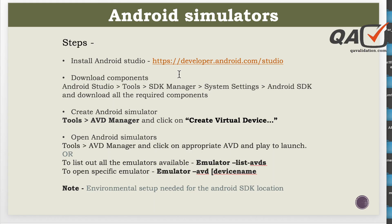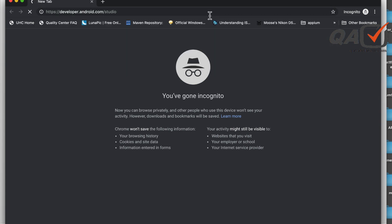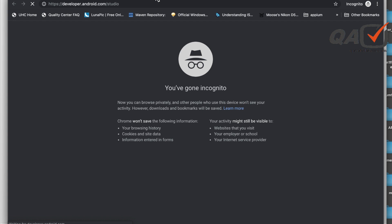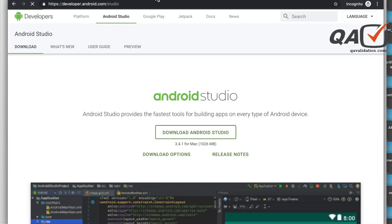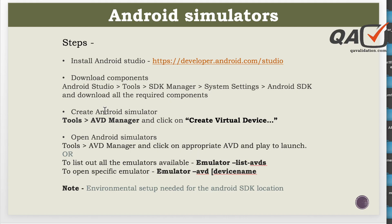First you need to open the browser and copy-paste this particular URL — I'll put the links into the description below, you can refer to that later. As soon as you navigate to this URL, you will get the Android Studio page. Depending on your operating system, whether you are using Windows or Mac, you can download Android Studio and install it as a normal application on your system. That is the first thing you need to do. Once you are done with the Android Studio installation, the second thing is that you need to download a few components.